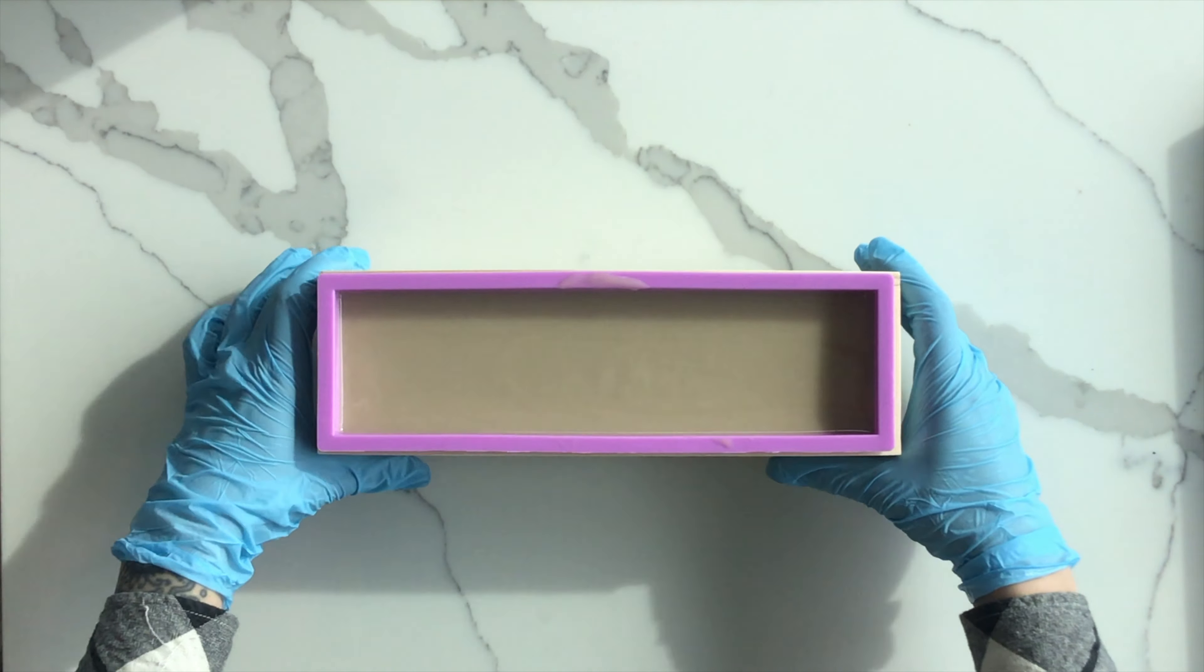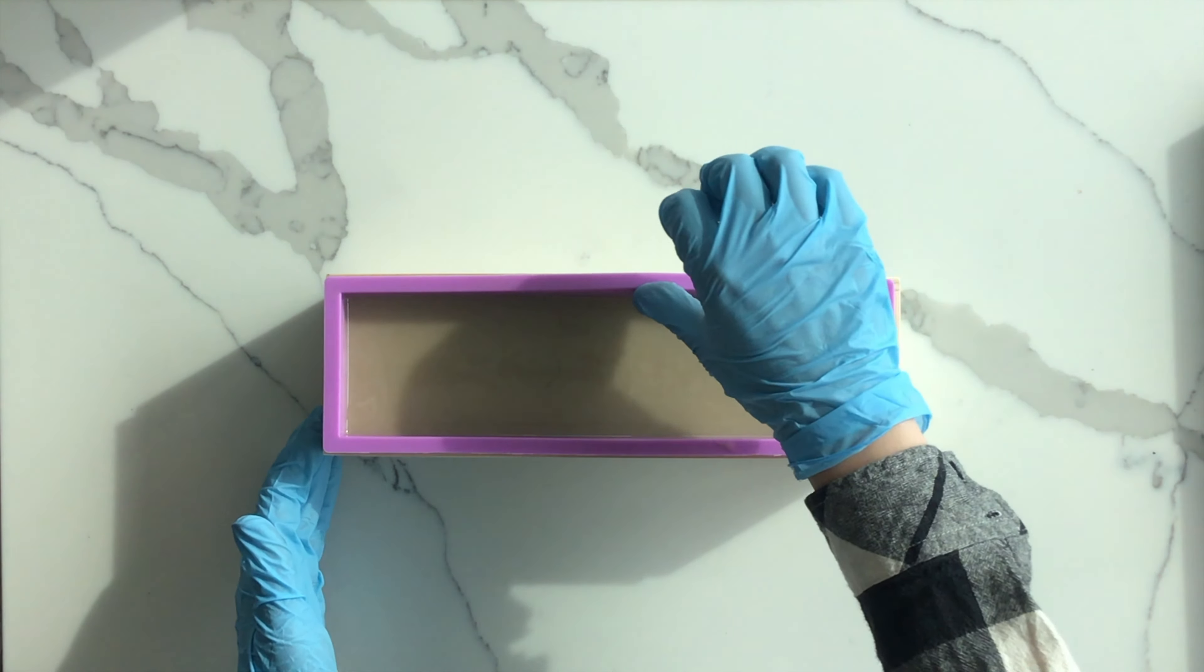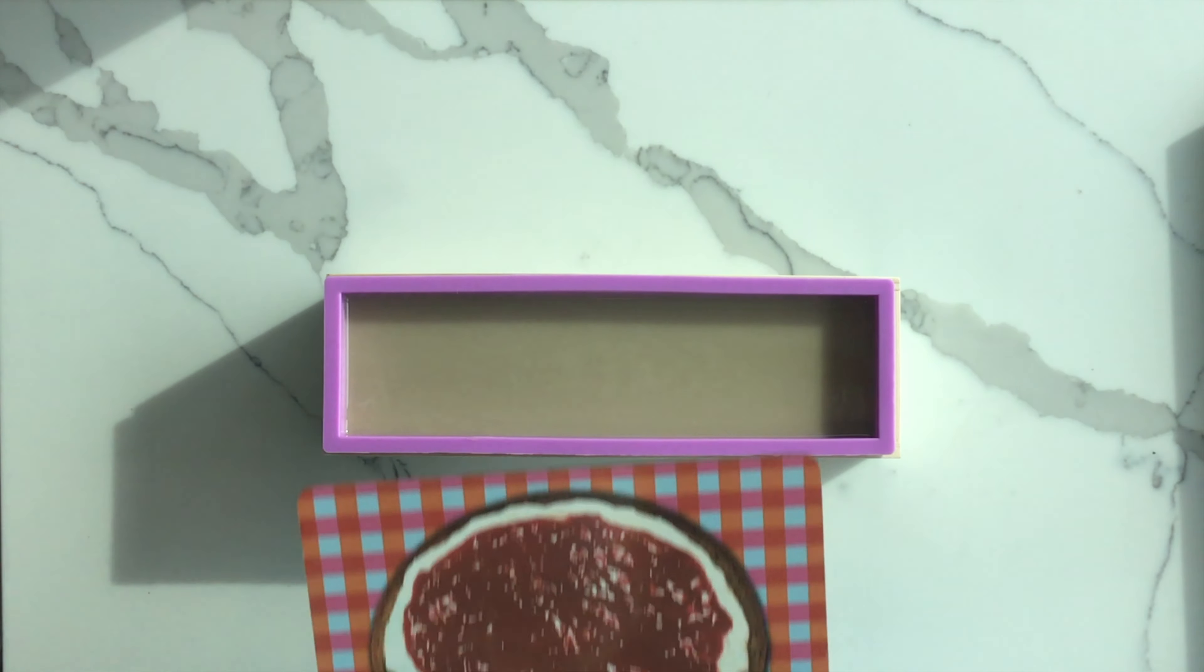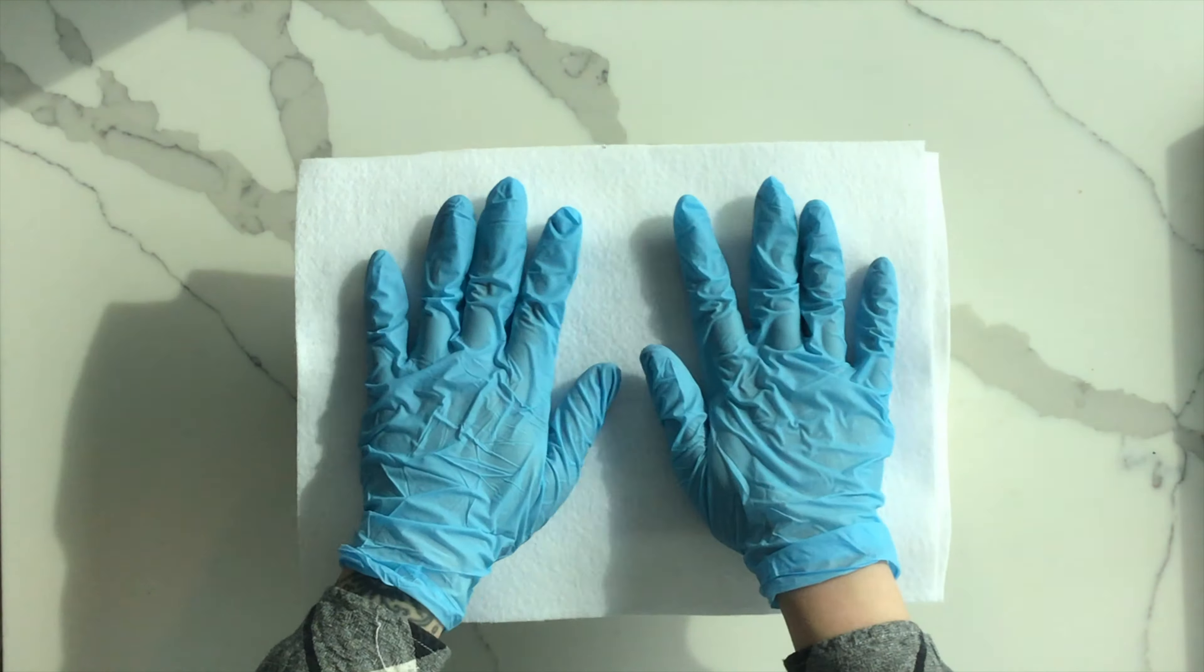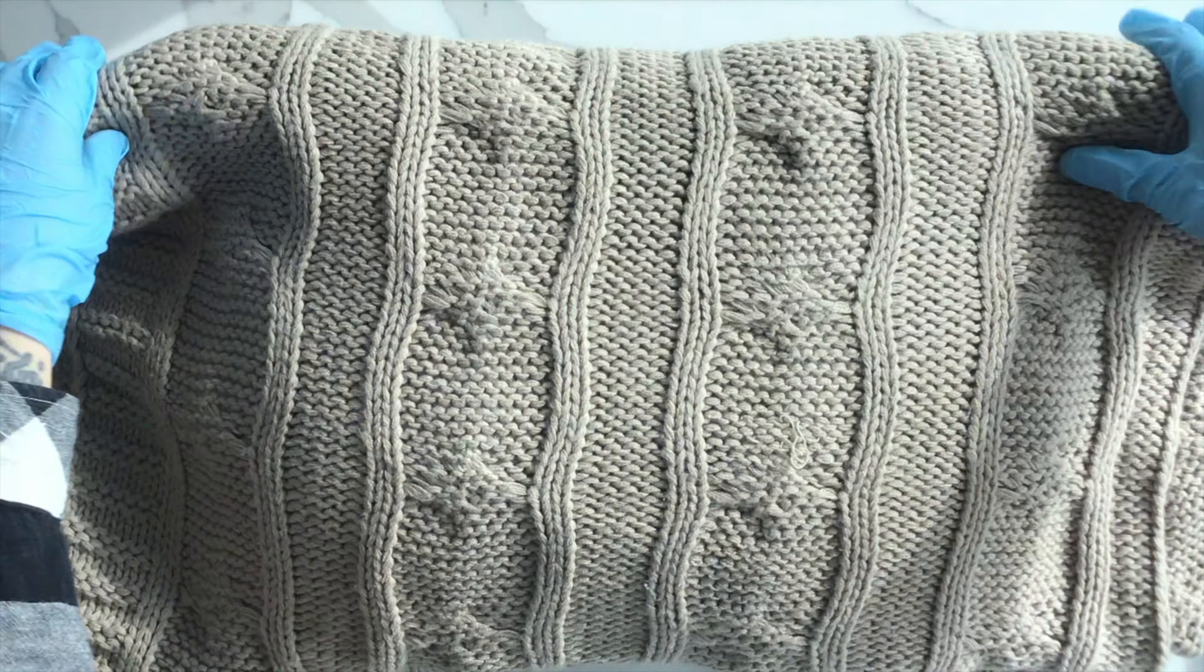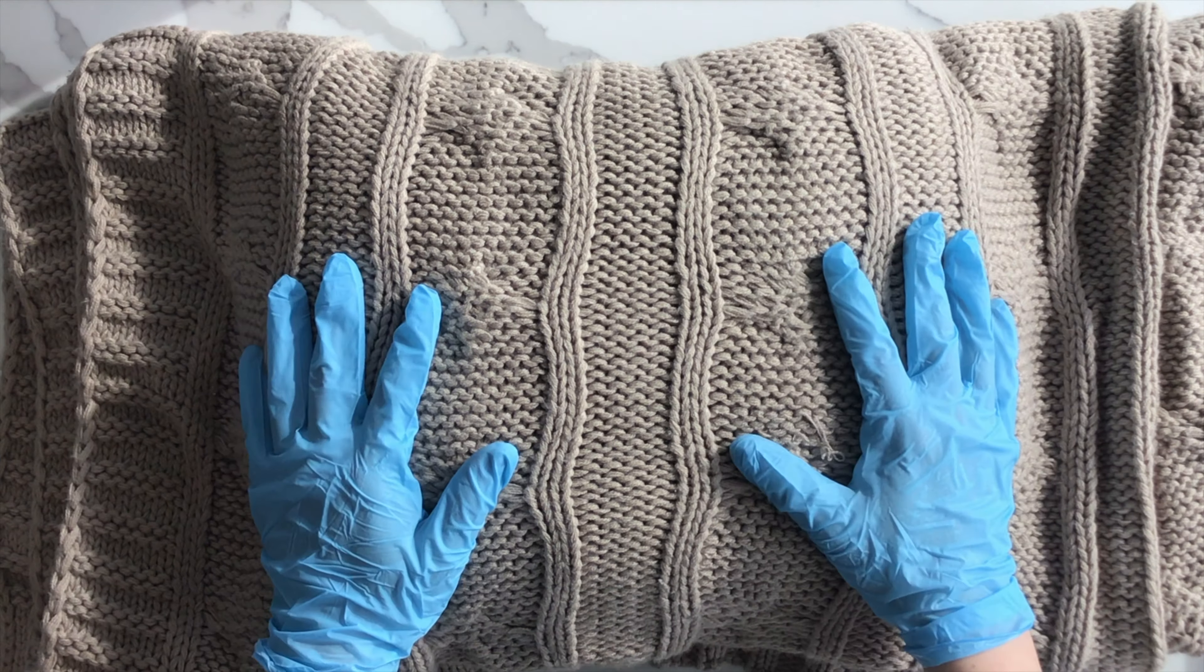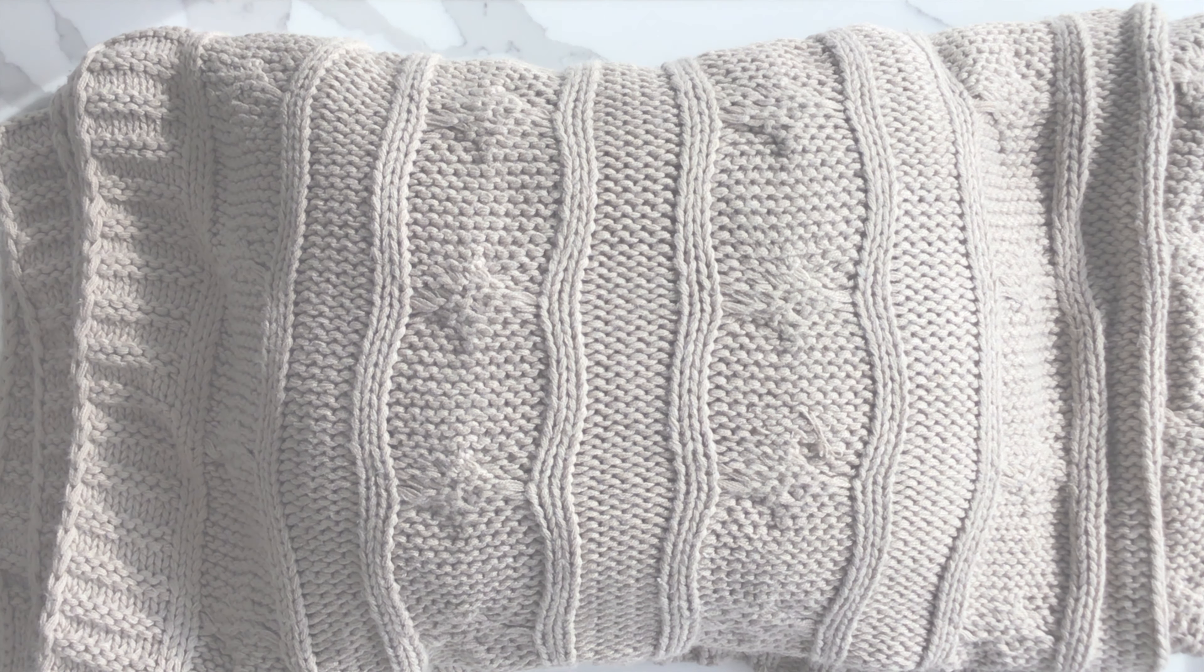Lightly tap the mold on the countertop to encourage any bubbles to the surface. If your mold doesn't have a lid, find something else to use to cover it. Put a couple pieces of fabric over the top to protect the blanket that you'll use to insulate the soap. Now tuck it in and say goodnight. Leave the soap to rest for a full 24 hours. This is allowing it enough time to insulate and fully saponify.